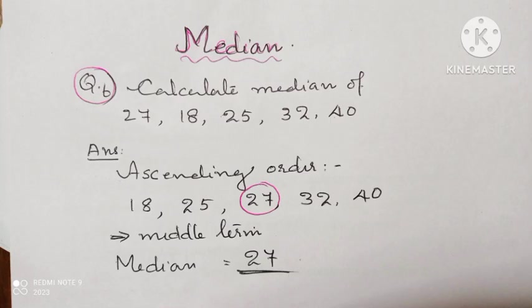Calculate median of 27, 18, 25, 32 and 40. Median we can find by arranging the data in ascending or descending order and the middle term is the median. Therefore, median is equal to 27.